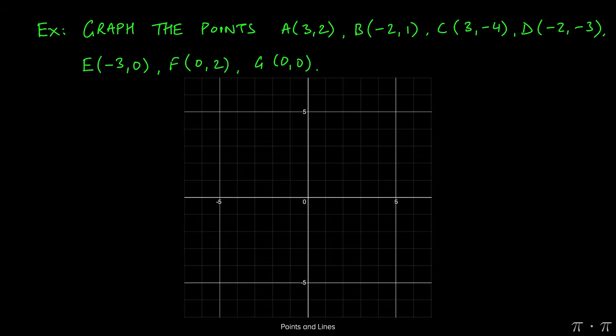Let's say we're asked to graph a whole bunch of these points. Starting with A, we're given the coordinates (3,2). This means that we need to move three units to the right on the x-axis, and then two units up on the y-axis. Remember that the x-coordinate always comes before the y-coordinate.